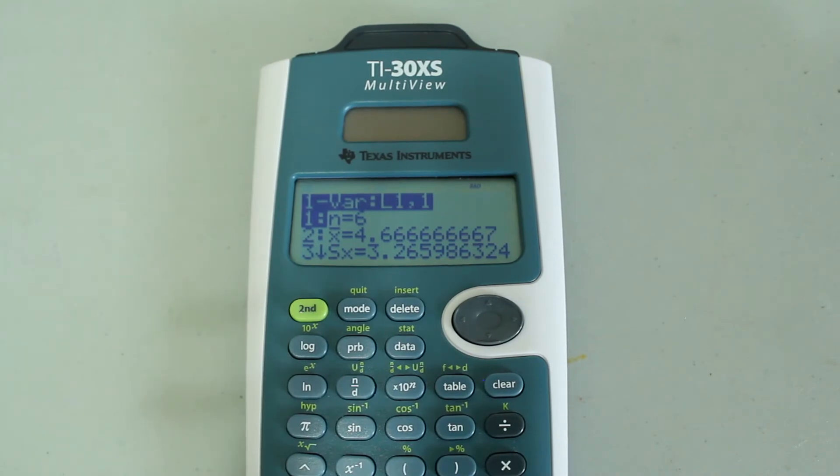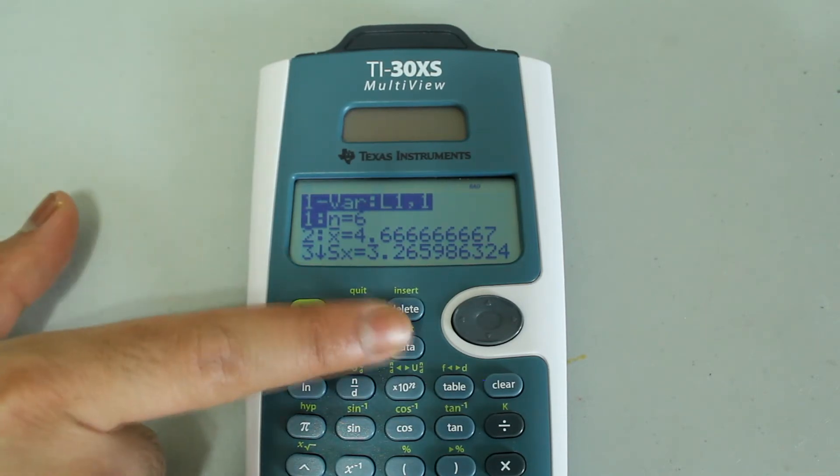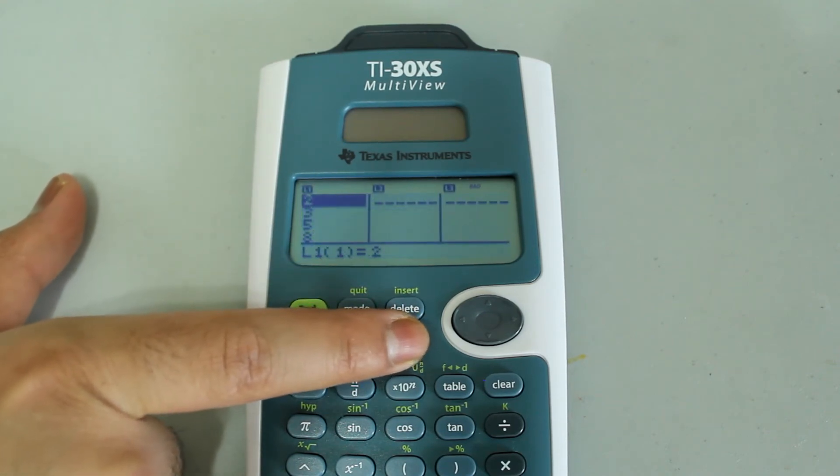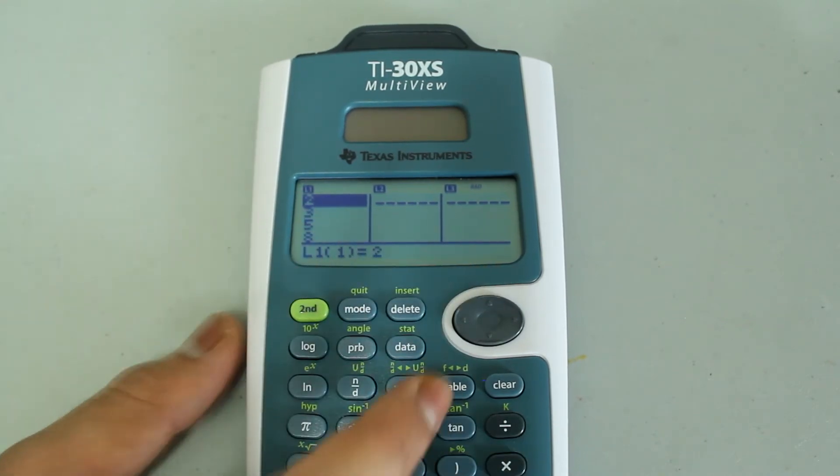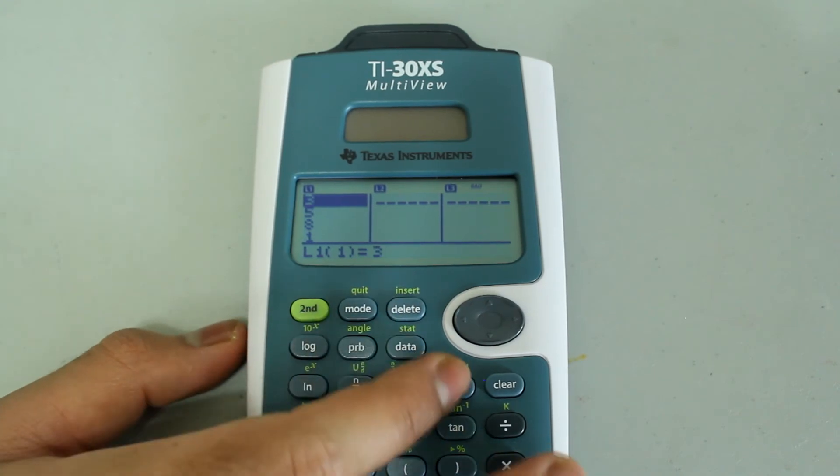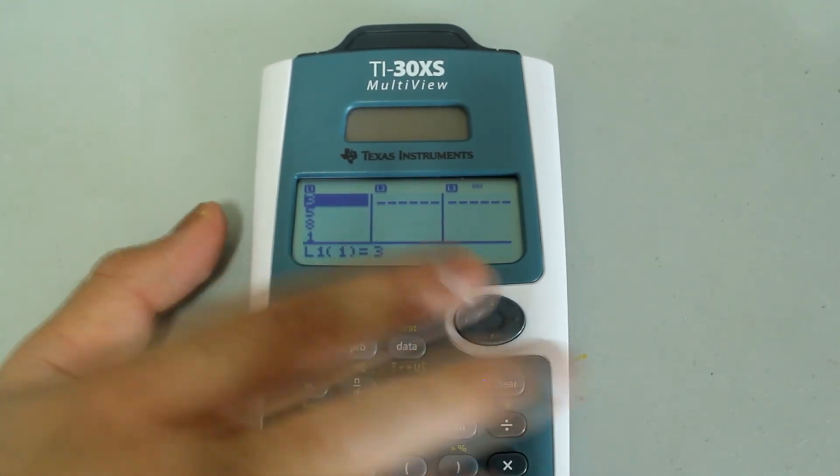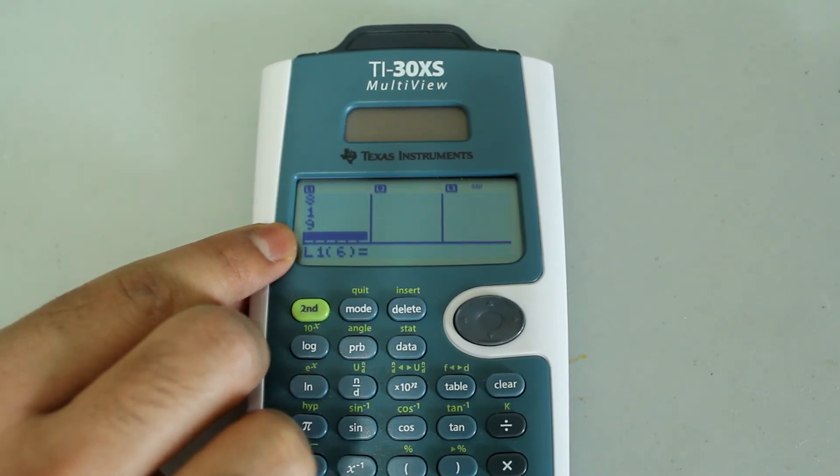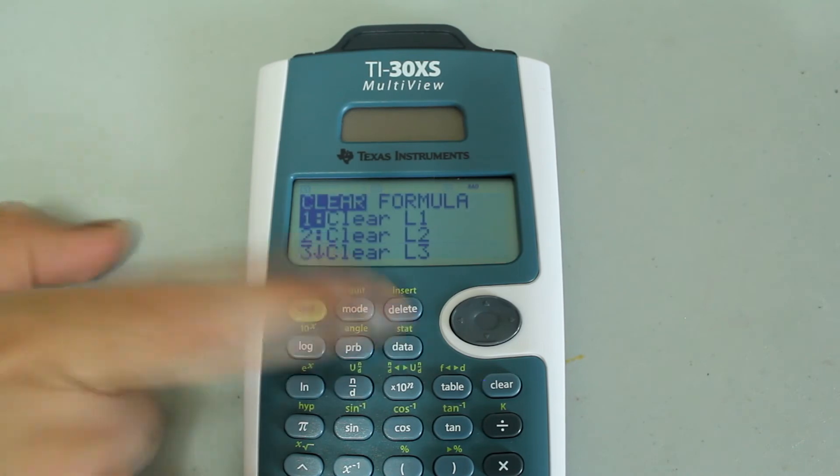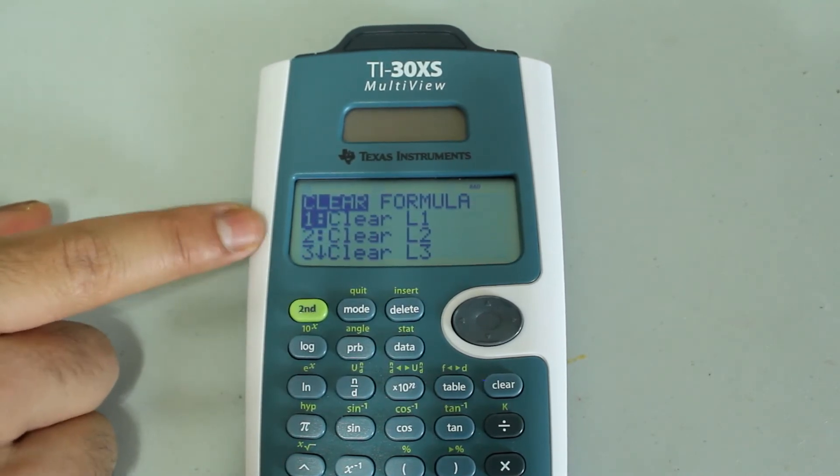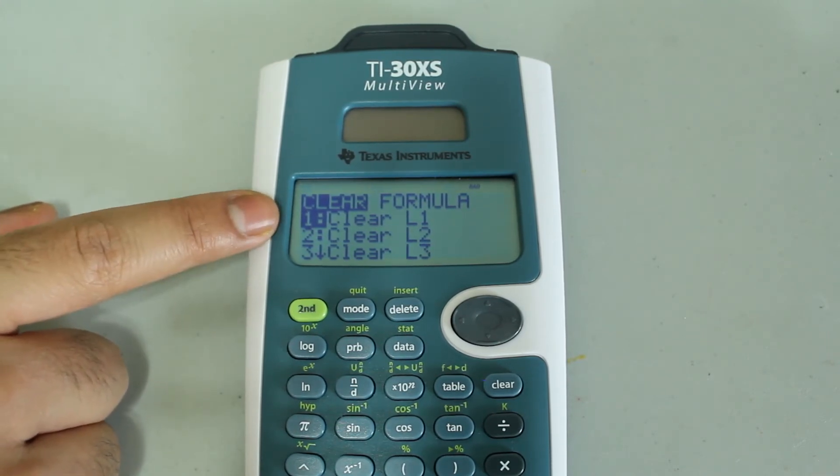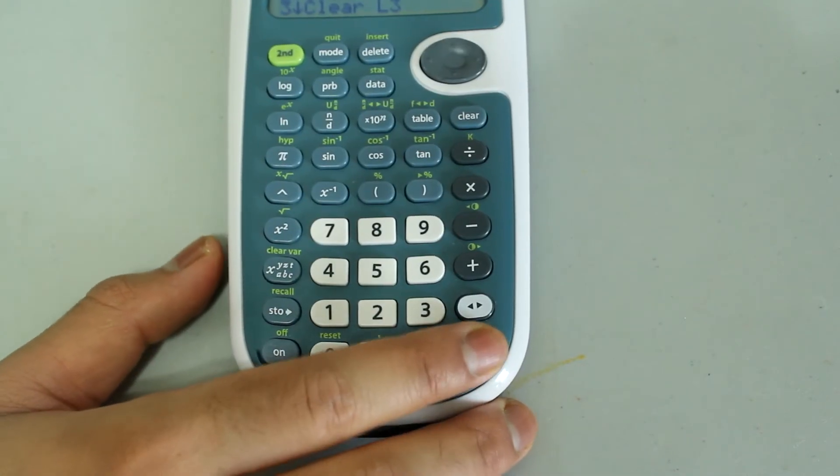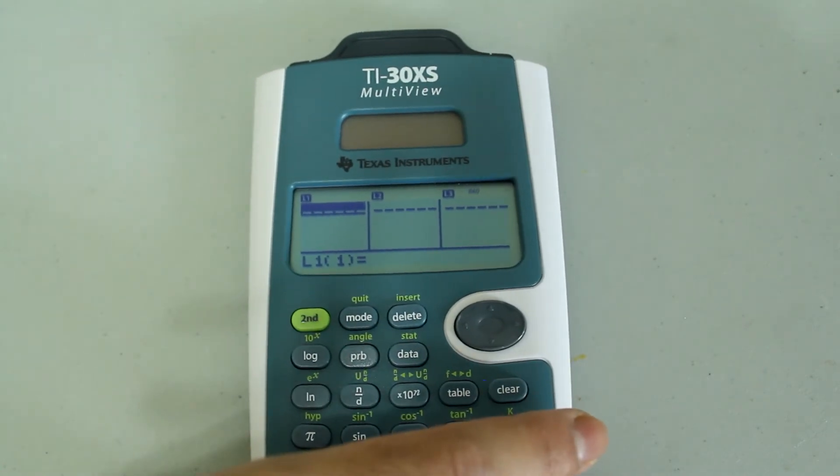Now, we're going to use the frequency feature a bit more. And first, let's clear the stored data. So head over to the data menu again, so press data. Now, if you want to just delete one entry, just have the cursor on that entry and press delete. But if you want to delete an entire list, just arrow over to the blank space, then press delete, and press the data button, and this comes up. And here, you can select which list you want to clear. Since I want to clear L1, I'm just going to press enter, since the cursor is already on the clear L1 option. So press enter. And now L1 is cleared.